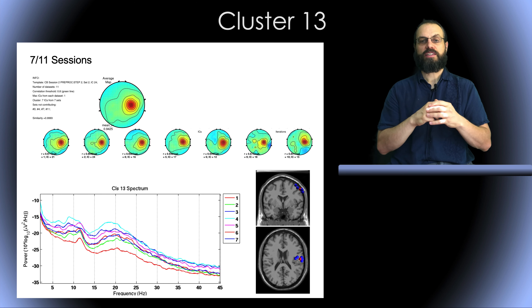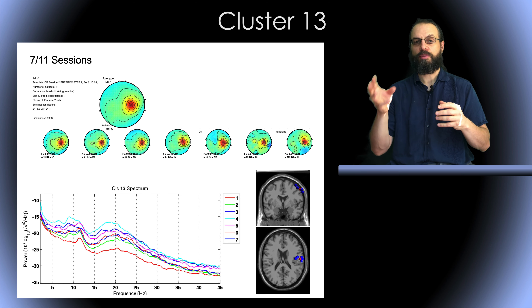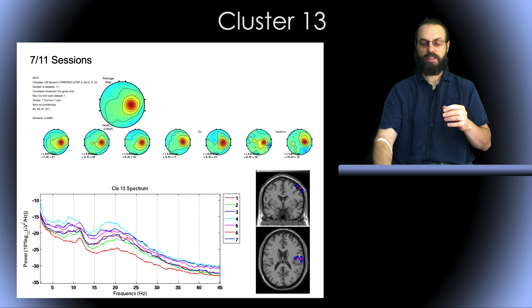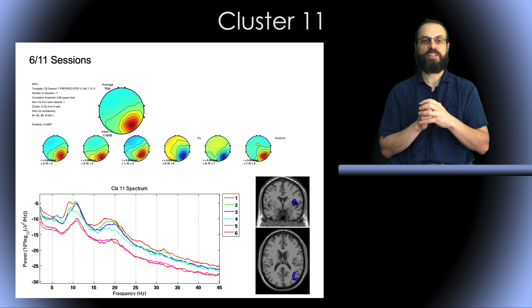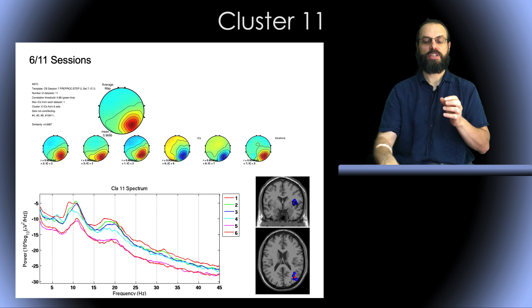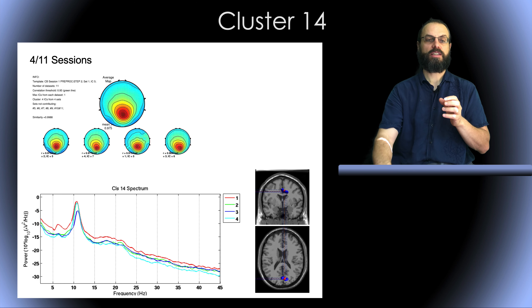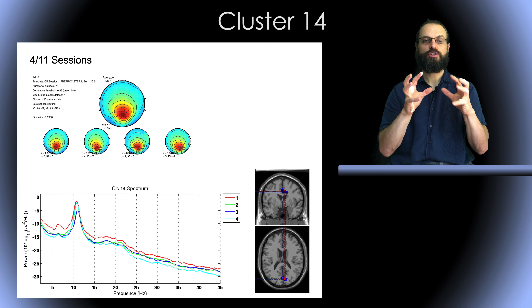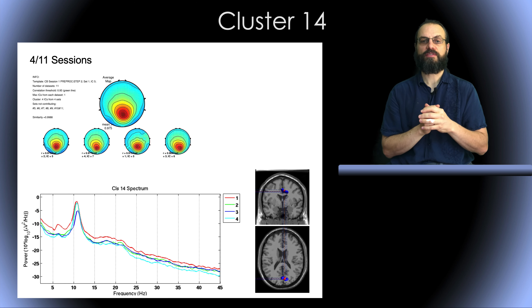It might be that in some sessions more artifact dominates, so ICA can't find these components. Here's another one — this is the left alpha rhythm. We could find this one in 6 of the 11 sessions. Finally, here we have a nice central component with a very sharp alpha peak, but we could only find this one in 4 of the sessions.